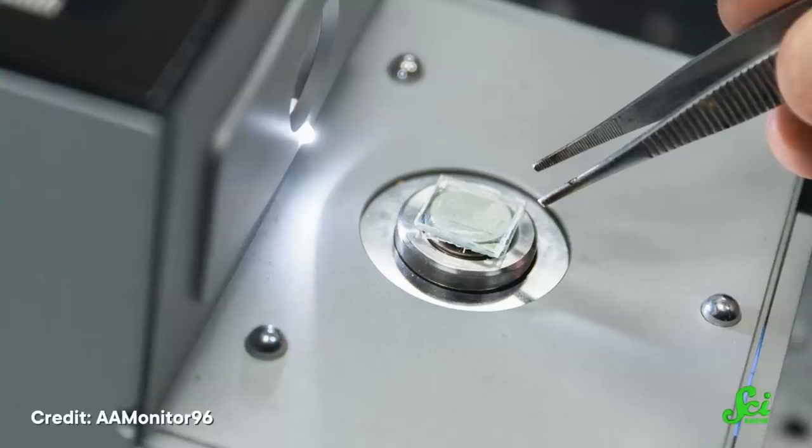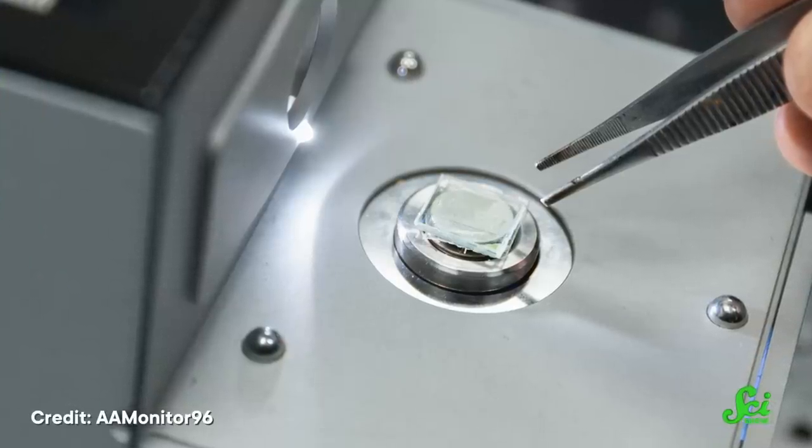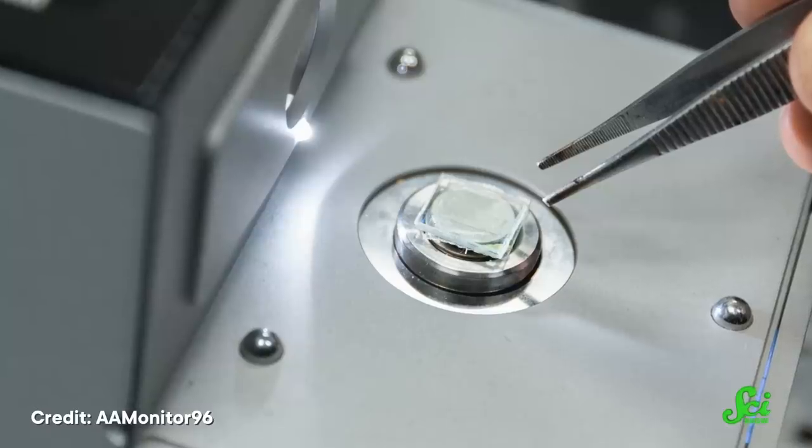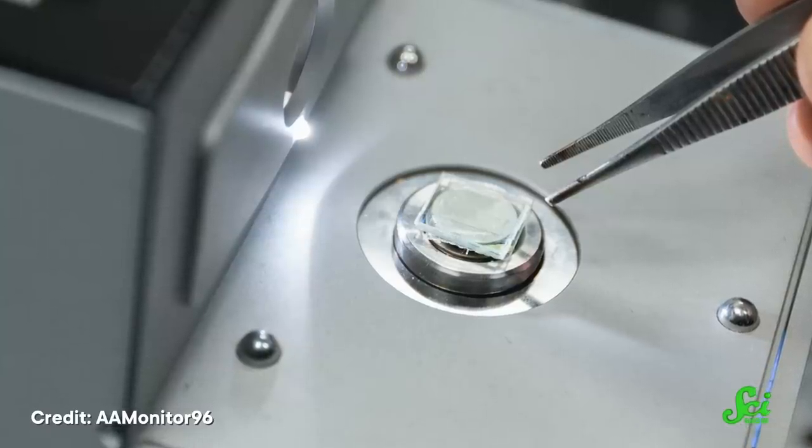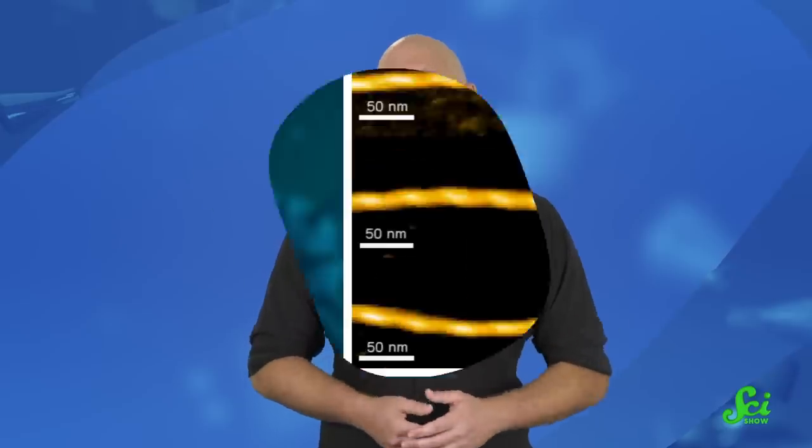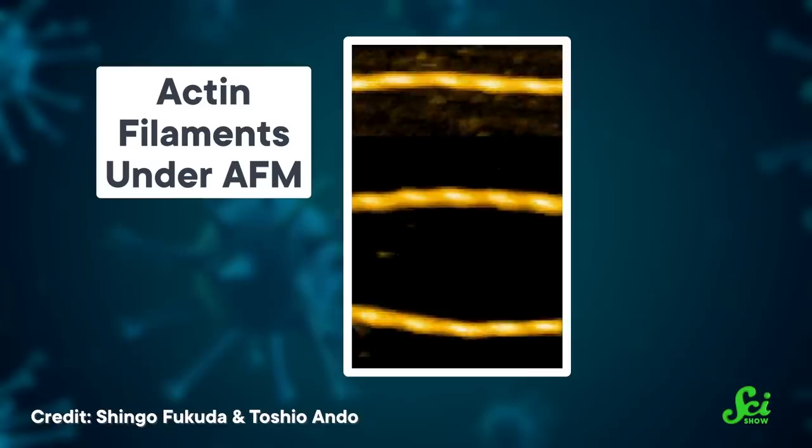But with all of its bioscanning power, the original atomic force microscopes came with one huge flaw. They needed minutes to complete a single image. That's plenty of time for camera-shy proteins and viruses to scurry away. So those early pictures could have missed a lot of important details. But by 2001, researchers had miniaturized the scanning machinery and made other improvements to kick AFMs into high gear.